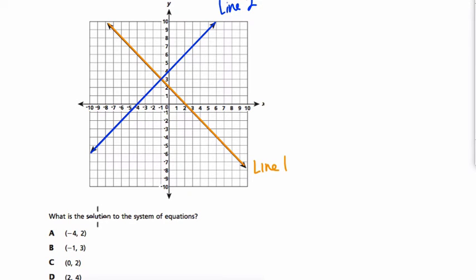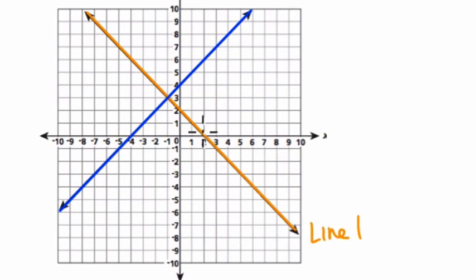So what is the solution to the system? Every point on a line is a solution for that line. What do I mean? On the orange line, for example, I've got the point right here. This point is (2, 0). The point (2, 0) is a solution for that line.